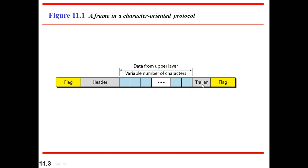After the data, you have a trailer for error detection and correction, and then another flag indicating the end of the frame. The beginning flag indicates start of the new frame; the end flag indicates end of the current frame. This is how framing is defined in the character-oriented approach.